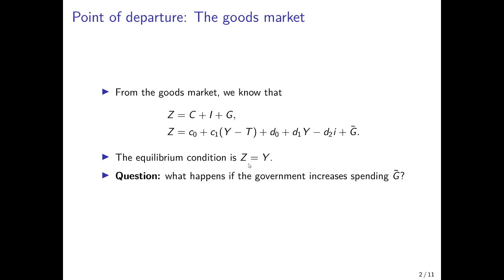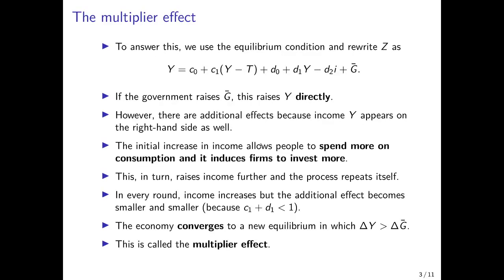We know from the goods market that the equilibrium condition is that aggregate demand equals aggregate supply. The main question we want to pose is: what happens if the government increases governmental spending or decreases taxes, which is also an expansionary fiscal policy? To answer this, we use the equilibrium condition that aggregate demand equals aggregate supply, which equals aggregate income — so on the left-hand side we now have aggregate income or aggregate output.